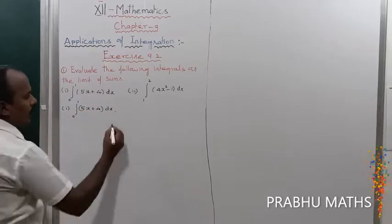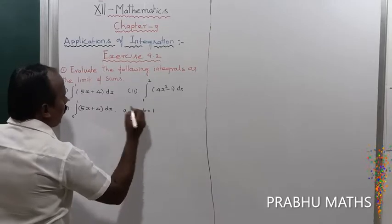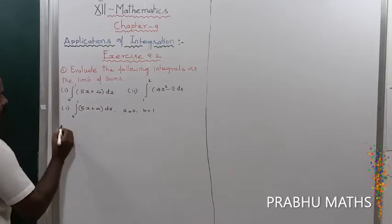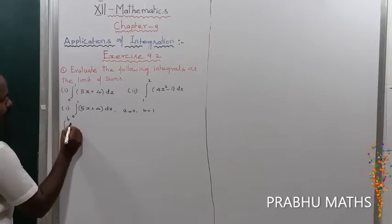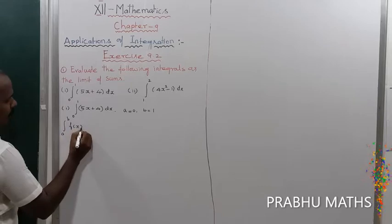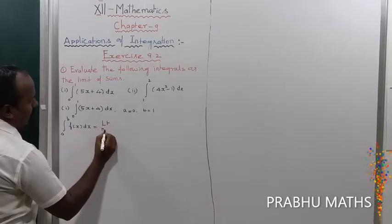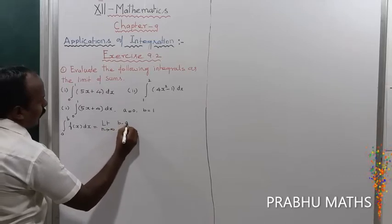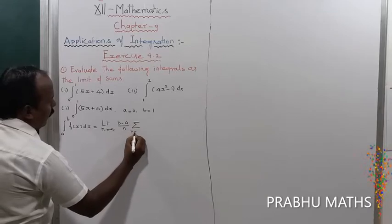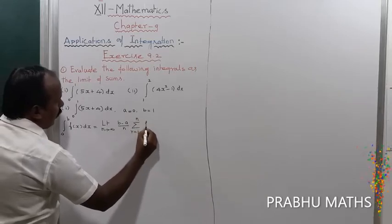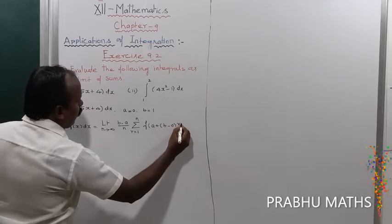For the first one, a is equal to 0 and b is equal to 1. The integral formula — limit of a sum — is: integral from a to b of f(x) dx equals limit as n tends to infinity of (b minus a) divided by n, times the summation of r from 1 to n of f(a plus (b minus a) times r by n).